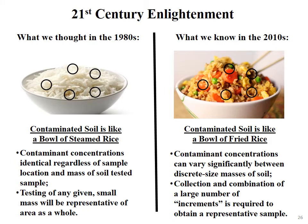Several people listening may know I've been working with colleagues at the Chinese Academy of Sciences on the same issues — how to avoid the problems we've dealt with for the last 30 years in site investigation methods. We've translated most of our guidance into Chinese. What we thought in the 1980s was that contaminated soil was like a bowl of steamed white rice — contaminant concentrations are identical regardless of where the sample is collected. Under that assumption, the mass doesn't really matter, you just need enough for the laboratory to test, and testing any given small mass of soil would be representative of the contamination area as a whole.